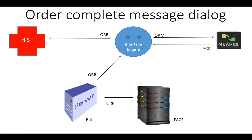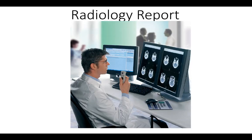The interface engine does an amazing translation: it takes the information from the ORR and builds an ORM to send to the voice recognition system, because orders don't go to the voice recognition system until the study is completed — there's nothing to dictate until then. So you have the ORR going back to the HIS to notify the nurse, the ORR going to PACS to notify the radiologist, and the ORR going through the interface engine being turned into an ORM so full order information goes to the voice recognition system. Notice that ORRs don't get ACKs — an ORR is almost like an ACK with order information built in, so it doesn't need its own ACK.